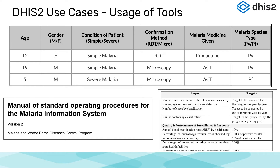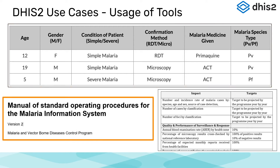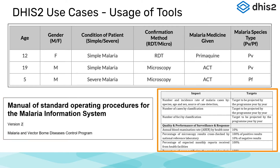Use cases are composed of several components — for example, specific data collection tools, standard operating procedures, and reporting outputs. We see some examples of this here: a malaria line list, or data collection tool, that would be used to define what data elements we need to collect; a standard operating procedure that defines how the data are actually collected; and an indicator framework that is used to define different reporting outputs.